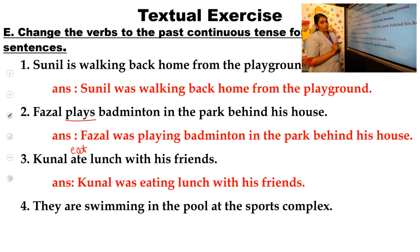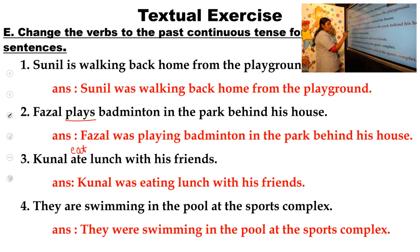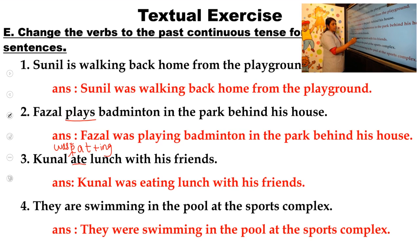Fourth question: 'They are swimming in the pool at the sports complex.' The ing form is already there. 'They' is a plural pronoun, so we change 'are' to 'were'. The answer is: they were swimming in the pool at the sports complex. Remember — when a past tense verb like 'ate' or 'wrote' appears, change it back to the main verb first, then add ing: eat plus ing gives 'eating'; write plus ing gives 'writing'.